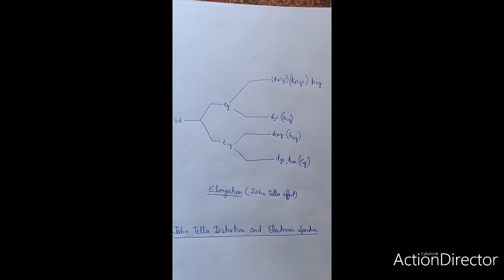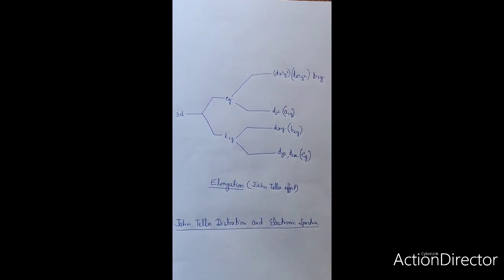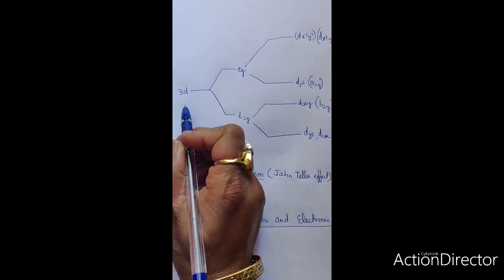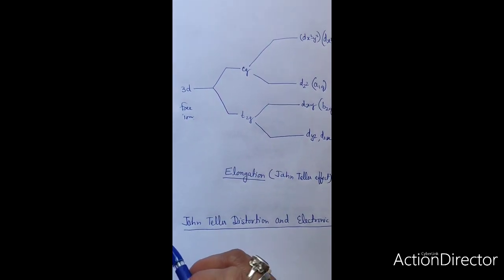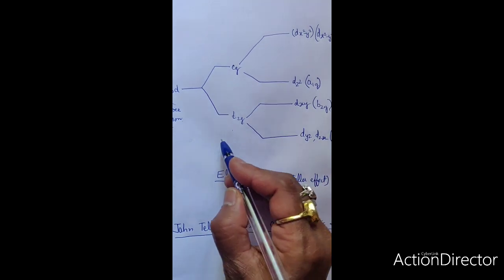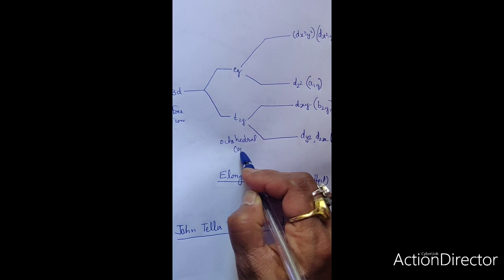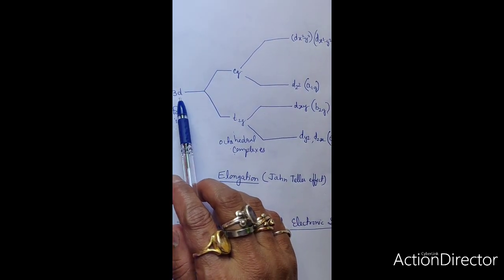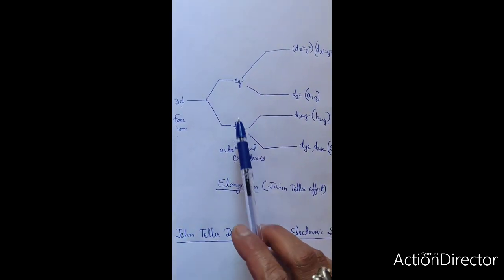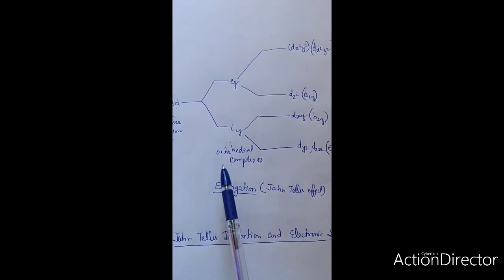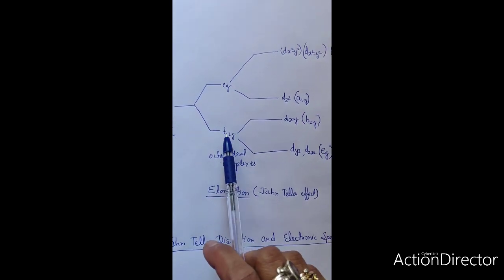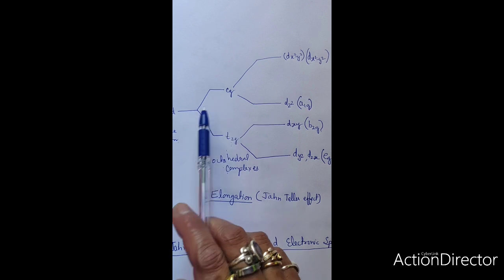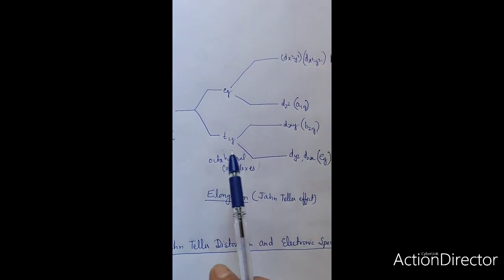In case of Jahn-Teller distortion, a nonlinear molecule — it may be an octahedral complex. This is the free ion, and when this free ion forms an octahedral complex, during crystal field splitting, this 3d degenerate orbital splits into two orbitals: t2g and eg. This nonlinear octahedral complex in a degenerate electronic state is unstable.